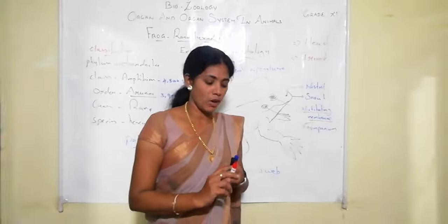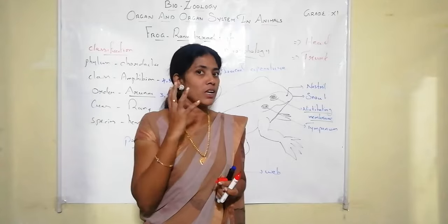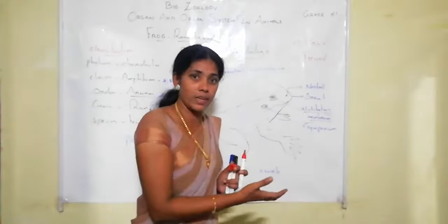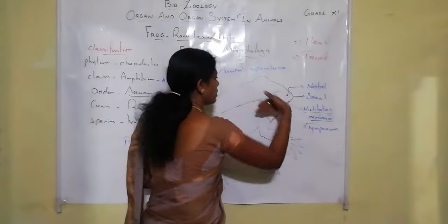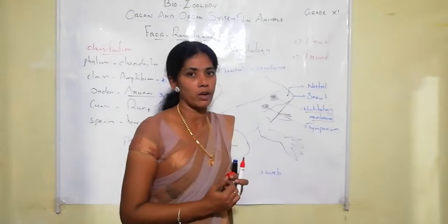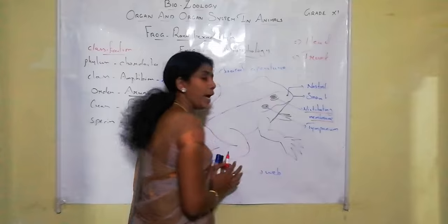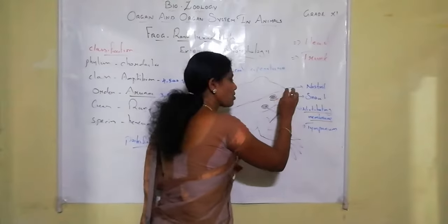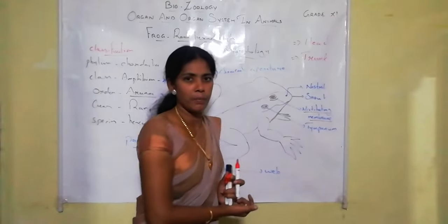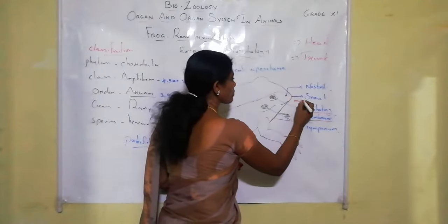Behind the eye there is a tympanic membrane or tympanum, which functions like an eardrum. Unlike humans, the frog has no external ear, but it has a pair of tympanic membranes present on either side of the mid-dorsal line. So the head region consists of: a wide mouth, a pair of nostrils, a pair of eyes with nictitating membrane, and a pair of tympanic membranes.